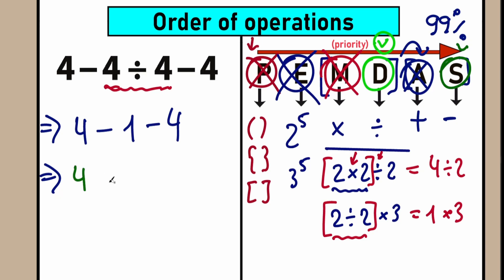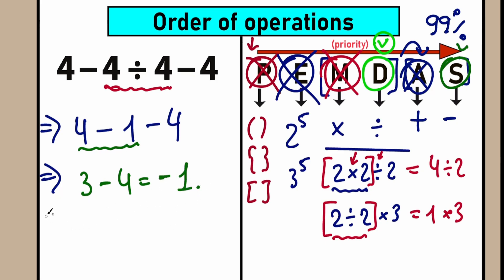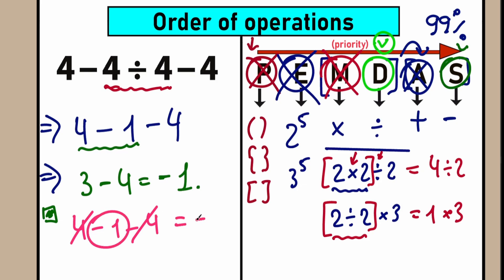So as a result we have 4 minus 1 equals 3, and 3 minus 4 equals minus 1. There's also a great alternative interpretation: we have 4 minus 1 minus 4, and we can cancel the 4 on the left with the 4 on the right, leaving us with only minus 1. This is like a quick algebra trick. So this is the solution to our question.